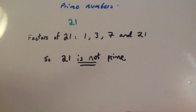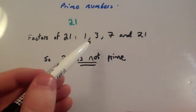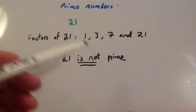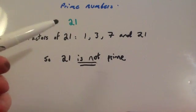21, on the other hand, is not prime. The reason is it's divisible by 1 and itself, but it's also divisible by 3 and 7. Therefore, it's got more factors than 1 and itself, so it's not prime.